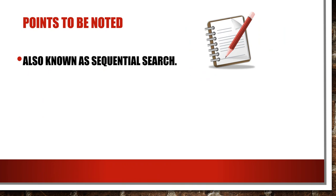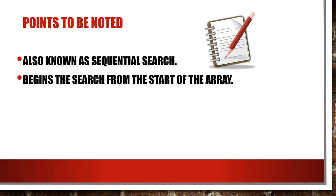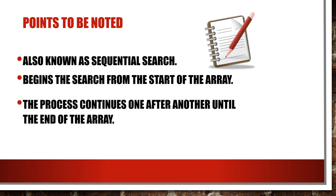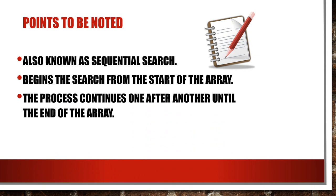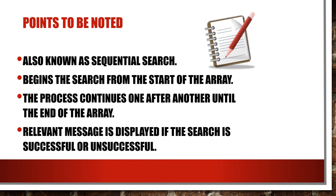Linear search is also known as sequential search. It begins a search from the start of the array. You will have a list of array elements and a search value. You start searching from the first element and continue one after another until the end of the array. If a match is found, you display a relevant message that the search is successful. If the element is not found throughout, you display that the search is unsuccessful.